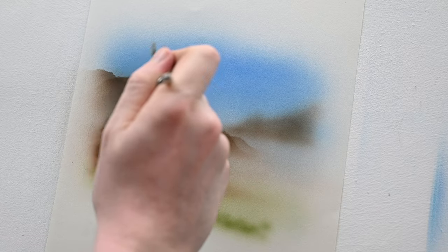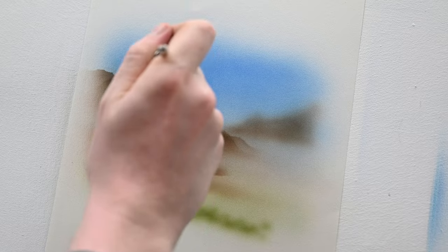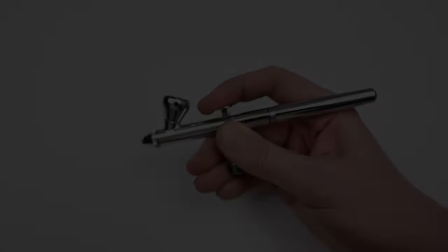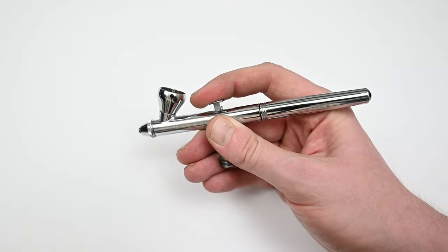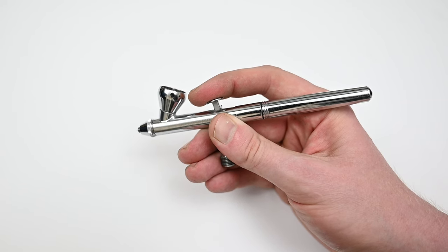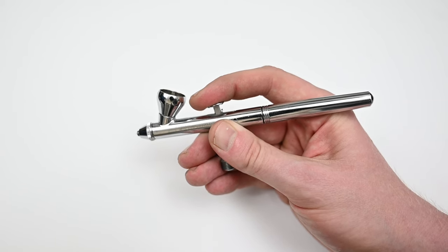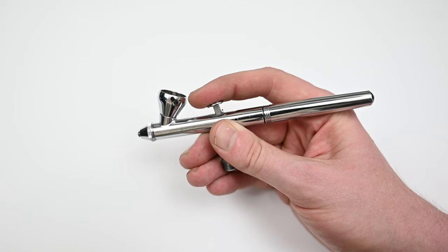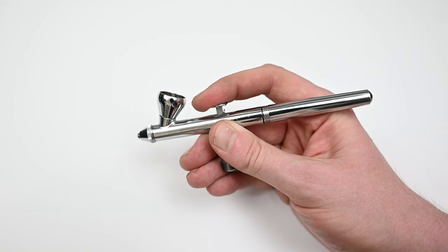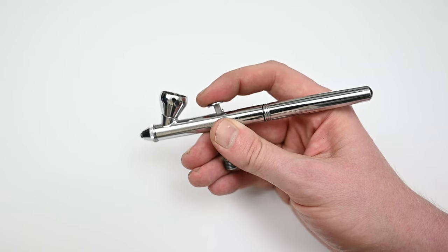The Neo4 Iwata costs around $60. And to me, this is an absolute steal. I'd say this and the Badger Sotar 2020 are probably the two best deals in airbrushing today. For anyone who wants to get into airbrushing and doesn't have a very high budget, I think the Neo4 Iwata is probably the best airbrush you could buy today for the price.